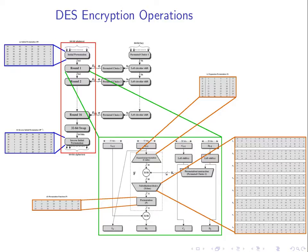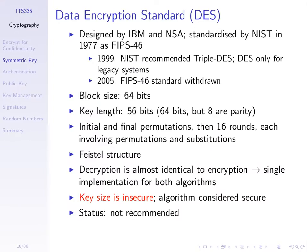DES uses exclusive-ORs, left shifts, and similar operations — it's quite complex. Most people consider the design to be quite secure: if you get ciphertext as output, it's very hard to work backwards and find the plaintext unless you know the key. The problem with DES is that the key was too small — 56 bits. In the 1970s, computers could not try all possible keys in a reasonable time.